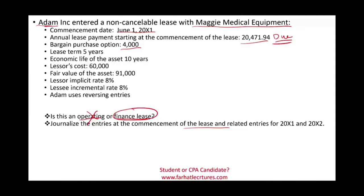The lease term is five years, and the economic life of the asset is 10 years. This is important: although the lease term is five years, the economic life is 10. We're going to see later — and I will explain — that we're going to be using the 10-year life to depreciate the asset.